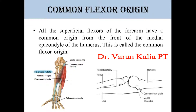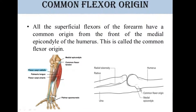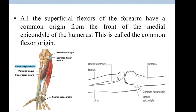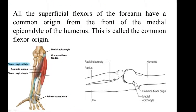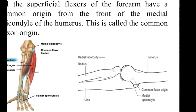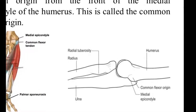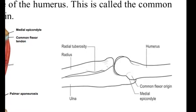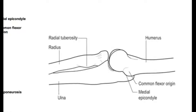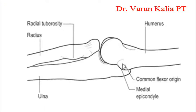This is called the common flexor origin. In this diagram you can see the humerus bone, the ulna bone, and the radius bone. Humerus bone کے lower end کے اوپر آپ کو medial epicondyle ملے گا۔ اس medial epicondyle کے front سے جتنی بھی superficial flexor muscles ہیں، وہ سب کی سب اسی medial epicondyle سے originate کرتی ہیں، اس لئے اس کو common flexor origin بولا جاتا ہے۔